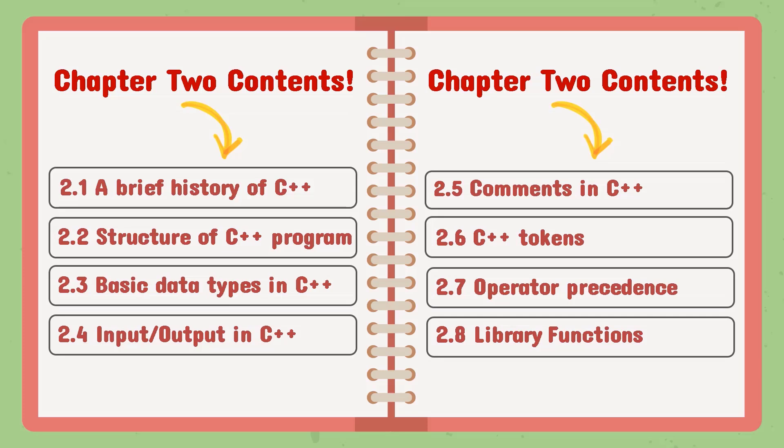The first topic will discuss about a brief history of C++. The second topic will discuss about structures of a C++ program. The third topic will be basic data types in C++. The fourth topic will be input-output in C++. The fifth topic discusses about comments in C++. The sixth topic will be C++ tokens, the seventh one operator precedence, and finally we have library functions in C++. These are the eight basic topics we are going to cover in this chapter.